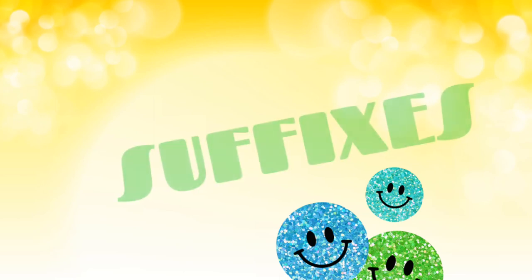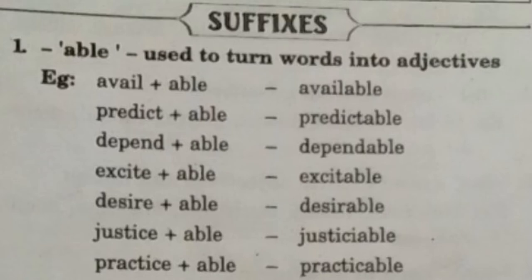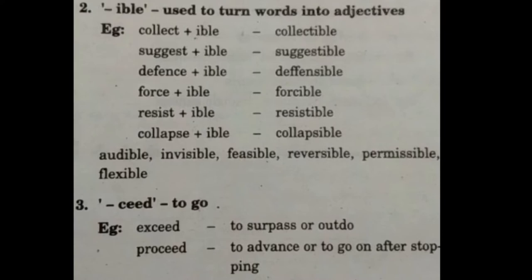Now moving on to suffixes. The first is '-able,' used to turn words into adjectives — for example, available, predictable, dependable, excitable, desirable, practicable, manageable. The suffix '-ible' is also used to turn words into adjectives — for example, collectible, suggestible, defensible, forcible, resistible, collapsible.